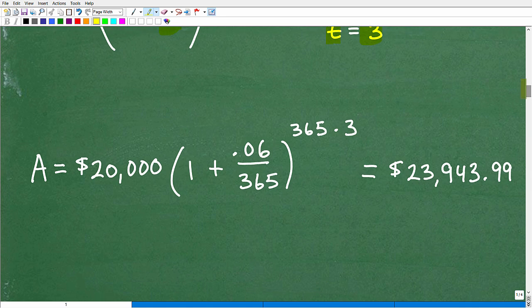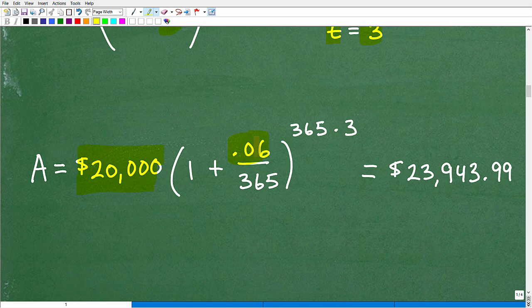Here is our principle P, one plus the interest rate expressed as a decimal 0.06 divided by N, 365 to N times T. That's 365 times three or three years.